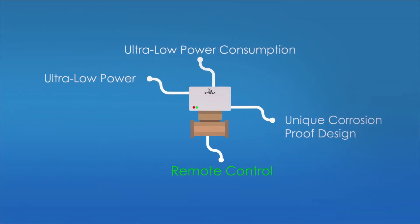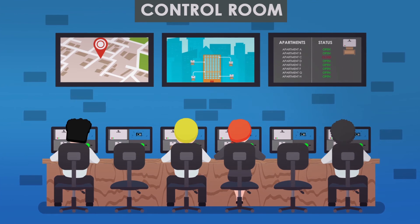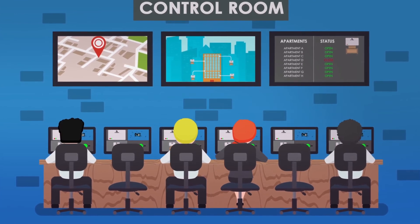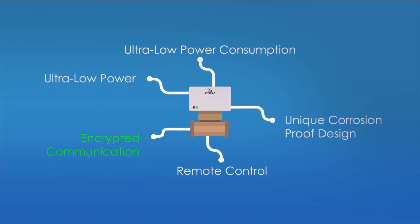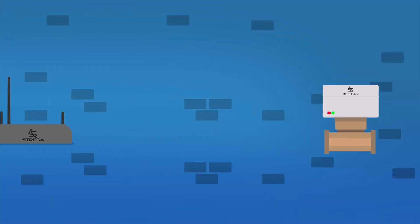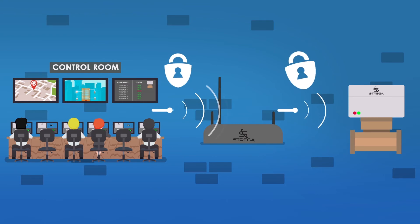The Strega smart valve has been designed to control the opening and closing of the valve, with a feedback signal sent back to the main control center. The control of the valve is fully secured by a top-down encrypted communication. A secure communication link is established between the control room and the remote valve.